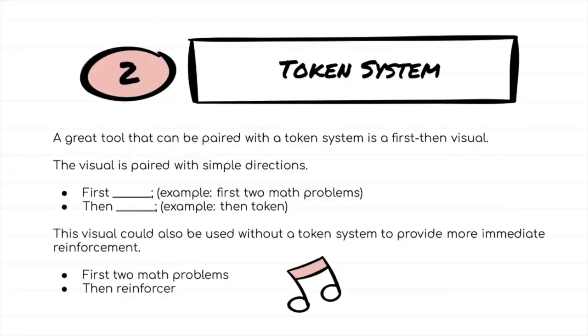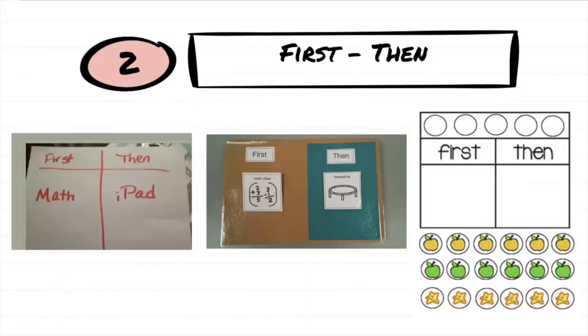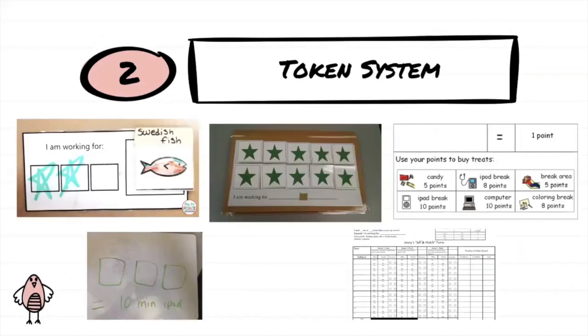A simple system known as a first-then schedule is a great visual to use with students who need something more immediately or who can wait for long periods of time and don't need the interaction or praise to do their tasks. Here are some examples of first-then visuals and here are some examples of token systems.